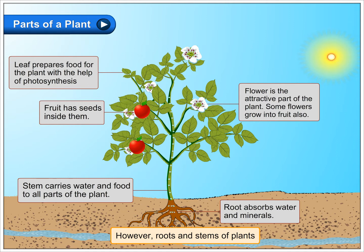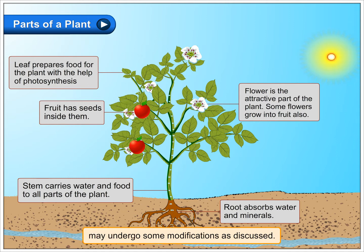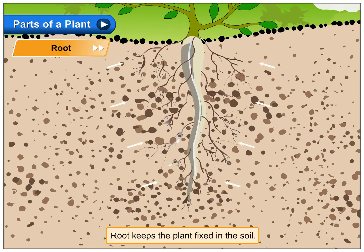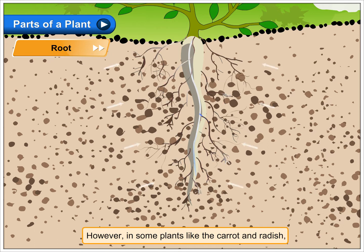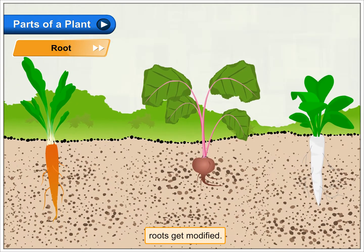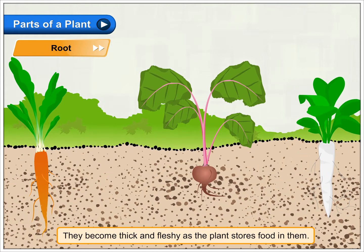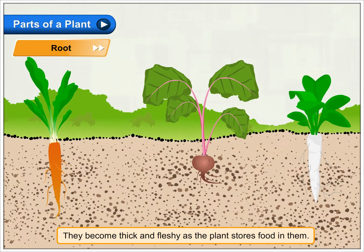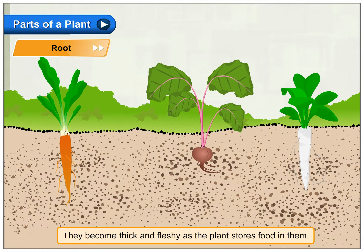However, roots and stems of plants may undergo some modifications. The root keeps the plant fixed in the soil. However, in some plants like the carrot and radish, roots get modified. They become thick and fleshy as the plant stores food in them.